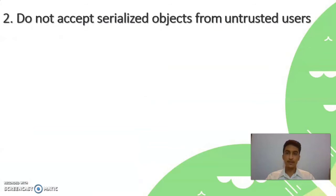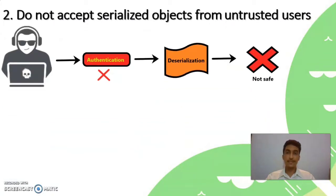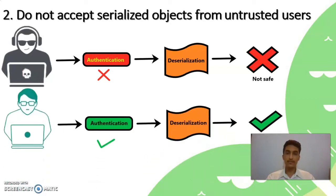The second method is: do not accept serialized objects from untrusted users. Authentication is the basic security need to be implemented in your application. By allowing only authenticated users to access the web application, you can minimize the chances of attack. If a user is not authenticated but is able to deserialize objects on the server, then there is a higher risk of attack. We should only allow authenticated users to deserialize objects on the server.